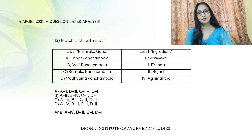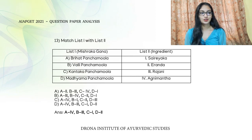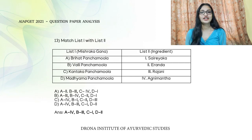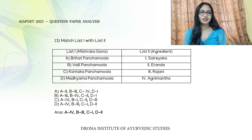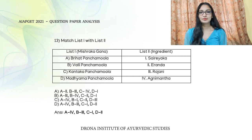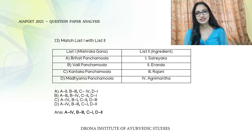The next question is a match the following. List one contains Mishraka Gana and list two contains their ingredients. Brihad Panchamula includes Bilva, Kashmariya, Tarkari, Patala, and Tunduka — so Agni Mandha is an ingredient. Valli Panchamula includes Vidhari, Sariba, Rajani, Guduchi, and Ajakshringi — so Rajani is an ingredient.